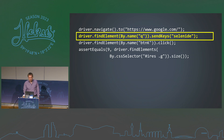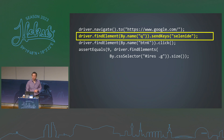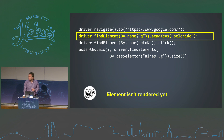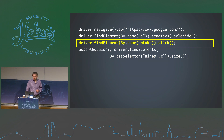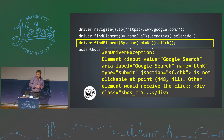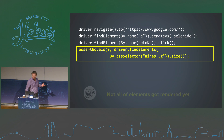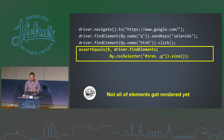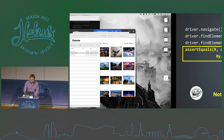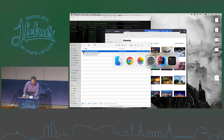Another line might fail because developers renamed a locator, or the element is not rendered yet due to slow rendering or slow internet. And another line might fail because not all elements are rendered yet — they're being rendered slowly — or the number of results changed in the database. There are plenty of reasons why these lines might fail.